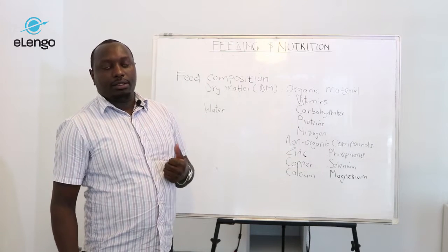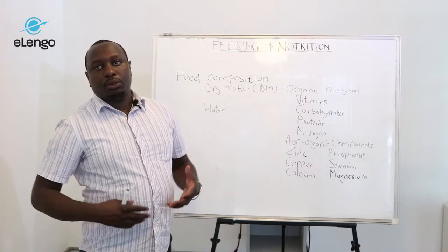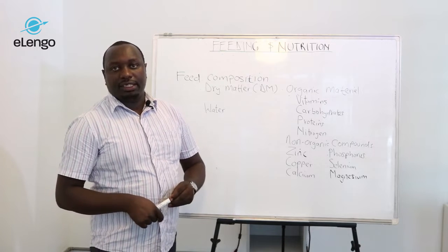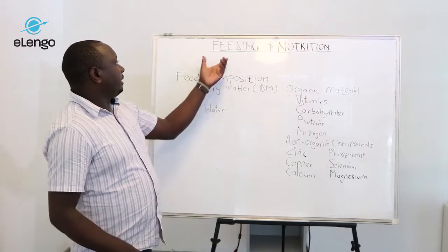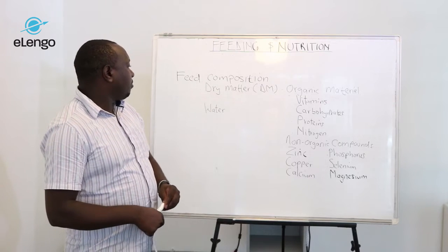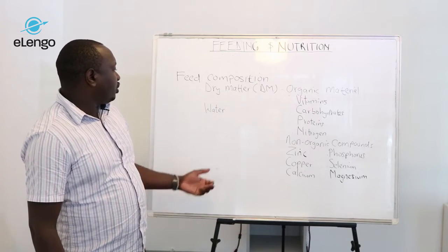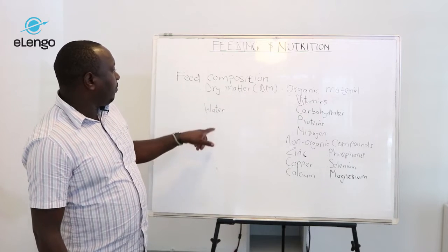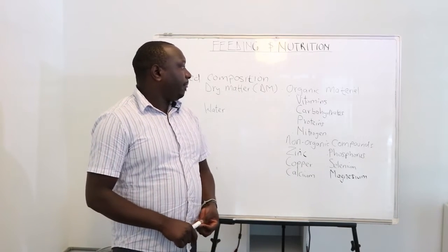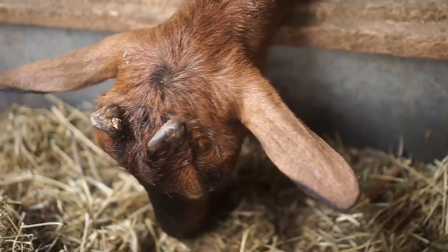A proper feeding also improves milk production and meat production. Proper feeding also gives the goat proper immunity such that the goats are not easily infected by various diseases. When we look at the feed, it contains two major components: dry matter and water, which takes the largest percentage — almost 80 to 85 percent. For the dry matter, we have two categories: organic matter and non-organic compounds.